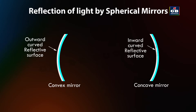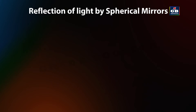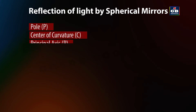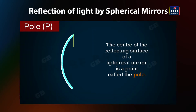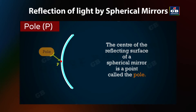A concave mirror is a type of spherical mirror that has an inward curved reflective surface. To understand reflection by a spherical mirror, we need to know certain terms. The pole is the center point of the reflecting surface of a spherical mirror. It lies on the surface of the mirror and is denoted by the letter P.